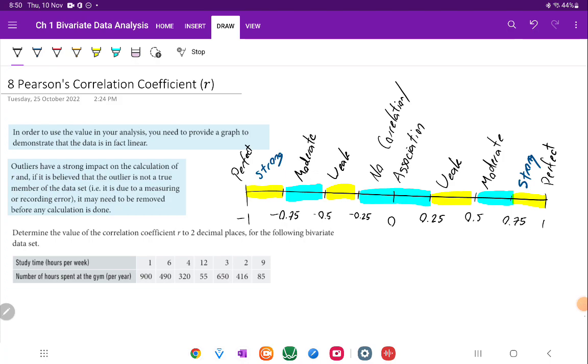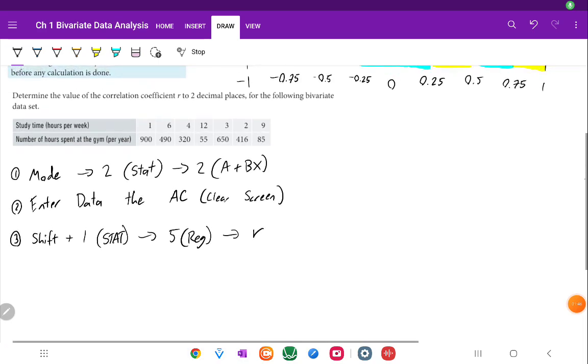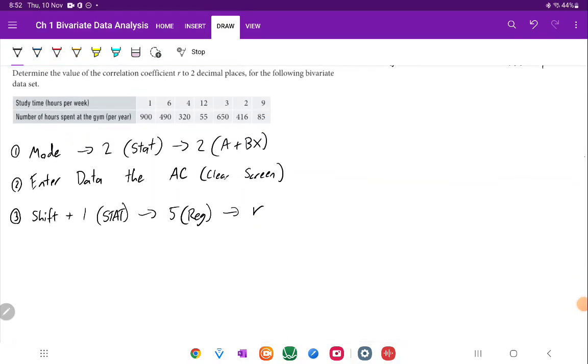These are the different measures of an R value. It can be calculated using a very complicated formula that involves the mean and the standard deviation that you might see on your formula sheet. But generally speaking, when we want to calculate R, we use technology, in particular our calculator. To do it on the calculator, all you need to do is click mode 2, enter the data, then clear the screen using the AC button, shift 1 to bring up the stat menu, and then press 5 for regression and click on R. I believe R is the third option, but I'm not 100% certain on that.